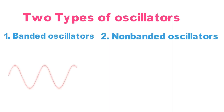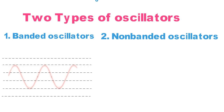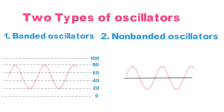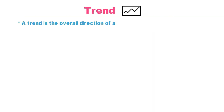There are two kinds of oscillators: banded and non-banded. A banded oscillator has a range like 0 to 100 — it cannot move below zero or above 100. A non-banded oscillator moves both positive and negative from a center point. Another name for a non-banded oscillator is a centered oscillator.